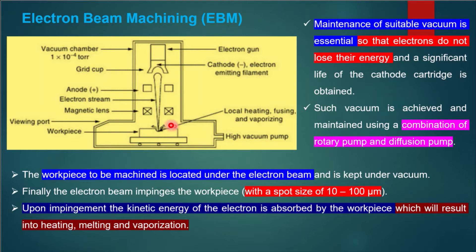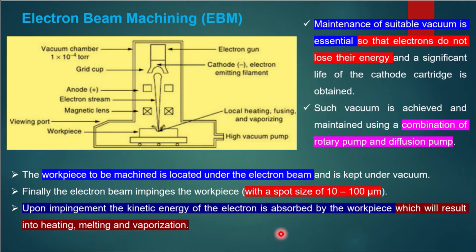The spot size — that is, the size of the area where the electron beam finally hits the workpiece — is 10 to 100 micrometers. When the electron impinges on the workpiece, the kinetic energy of the electron is converted to heat energy, which results in removal of material through heating, melting, and vaporization.